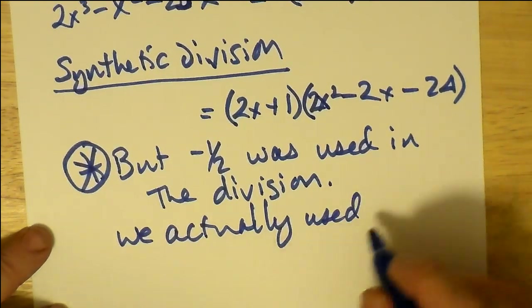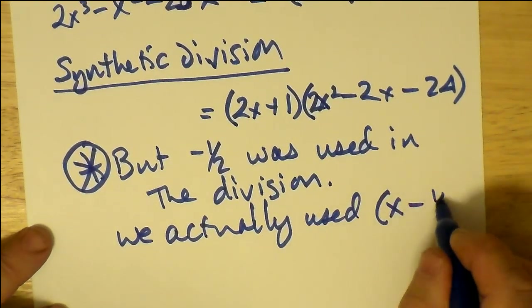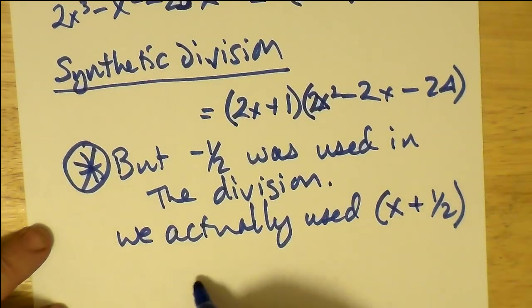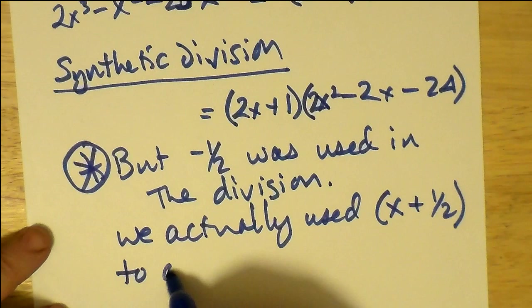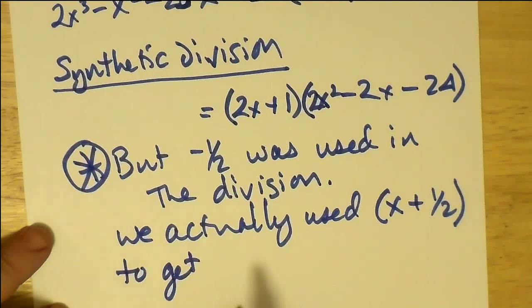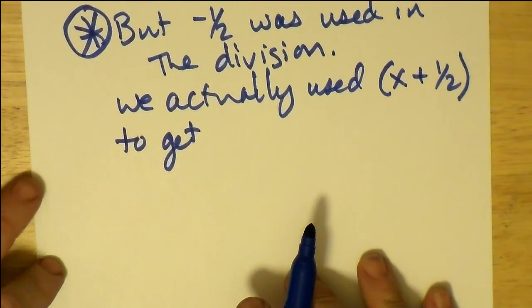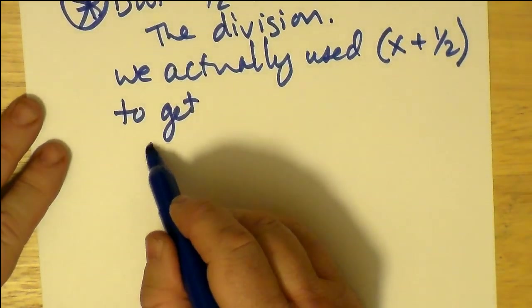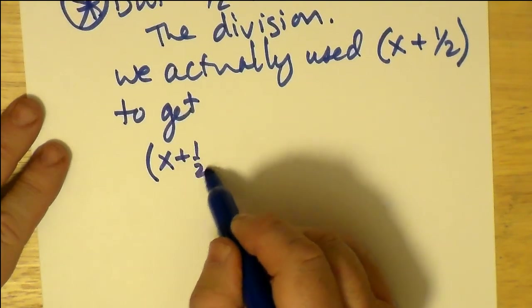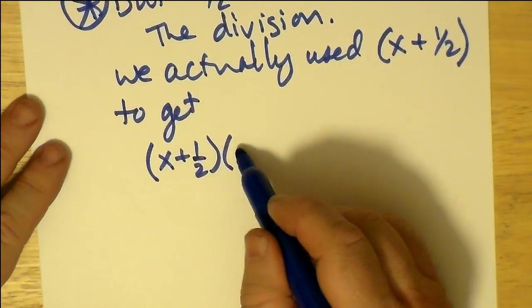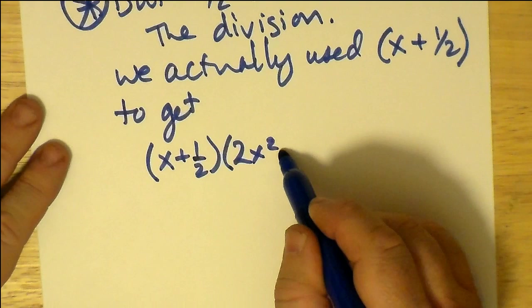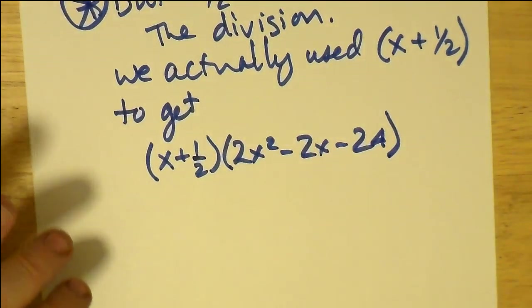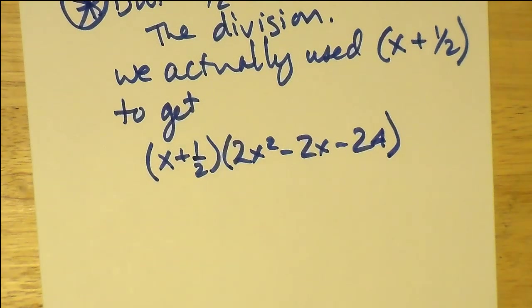So what we actually used was basically saying that x + 1/2 was the factor. Well, if x + 1/2 is one of the factors, then the other factor makes sense; the other factor should be double, and that's because x + 1/2 is one half of what that factor should be.